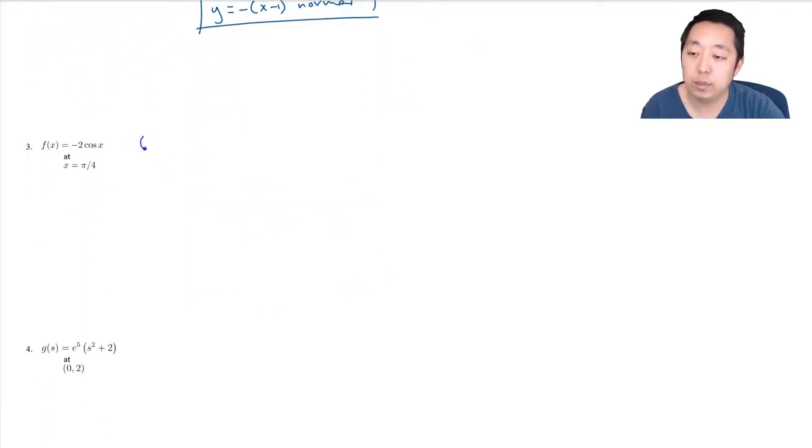Okay, what is the point here? The point is pi over 4 and negative 2 cosine of pi over 4. Cosine of pi over 4 is root 2 over 2, so this is negative root 2. My equation is going to be y minus negative root 2 equals m times (x minus pi over 4), so this is y plus root 2 equals m times (x minus pi over 4).